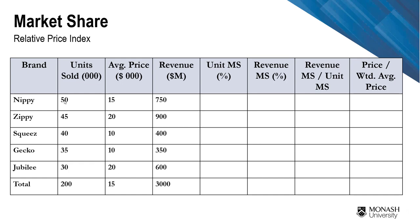Nippy has 50,000 units sold. The average price paid is 15,000. Revenue is 750 million — that is simply 50 times 15, which gives you 750. Just to clarify: the average price column is an average, while units sold and revenue are totals.